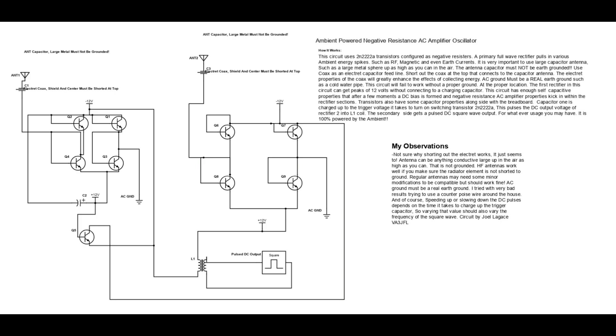This circuit uses 2N222A transistors configured as negative resistors. A primary full-wave rectifier pulls in various ambient energy spikes, such as RF, magnetic and even earth currents.